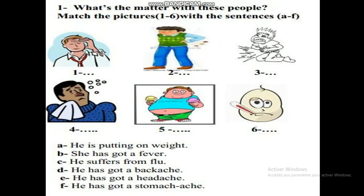Now we have an exercise. We have some pictures and some statements, and we need to put the right number in front of the corresponding statement. For example: 'He is putting on weight' — that's number five. 'She has got a fever' — that's number six. 'He suffers from flu' — that's number four. 'He has got a backache' — number two. 'He has got a headache' — number three.